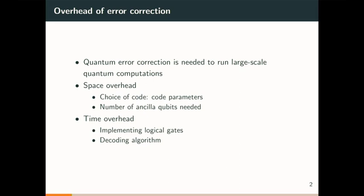To start off, we know that quantum computers can solve certain problems faster than classical ones, but if we want to run large instances of those problems, we're going to have to use quantum error correction. When we have an error correcting code, that's going to have some extra overheads involved — in particular, space overhead and time overhead. The space overhead is going to be dictated by the choice of code, and we should also consider the number of ancilla qubits needed.